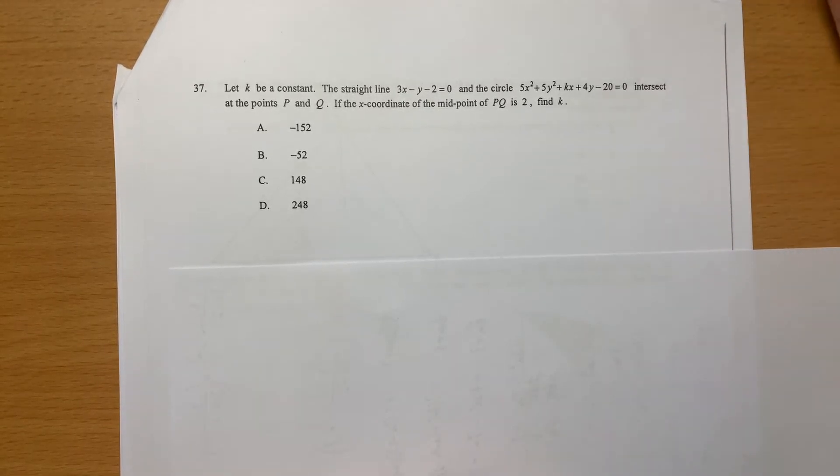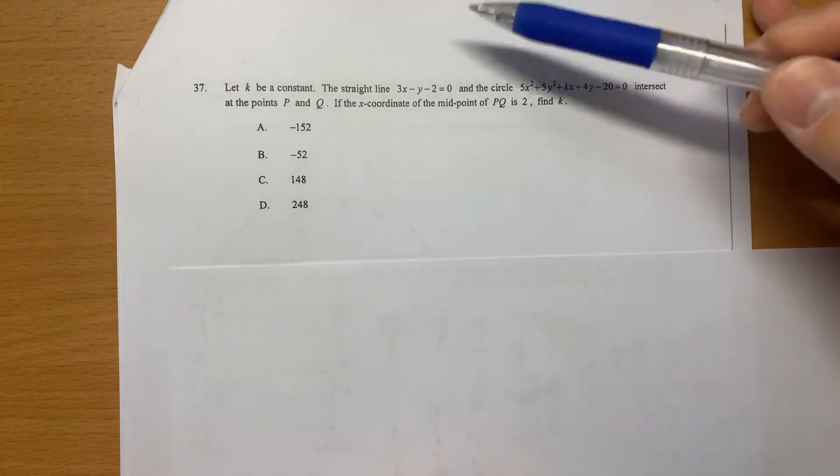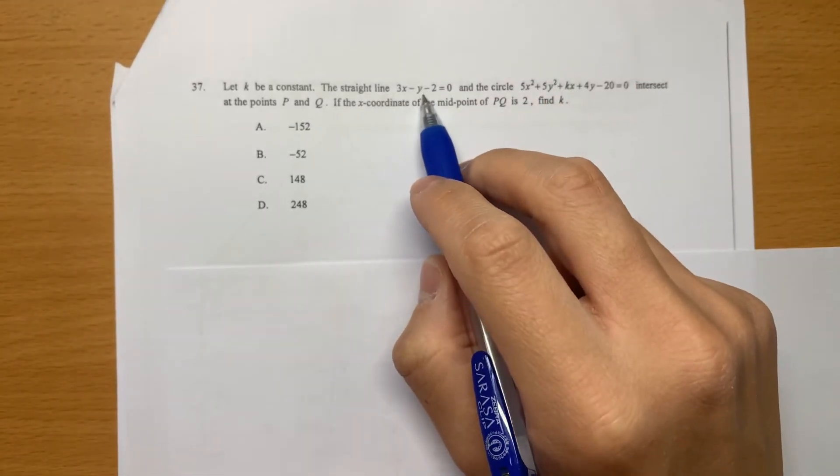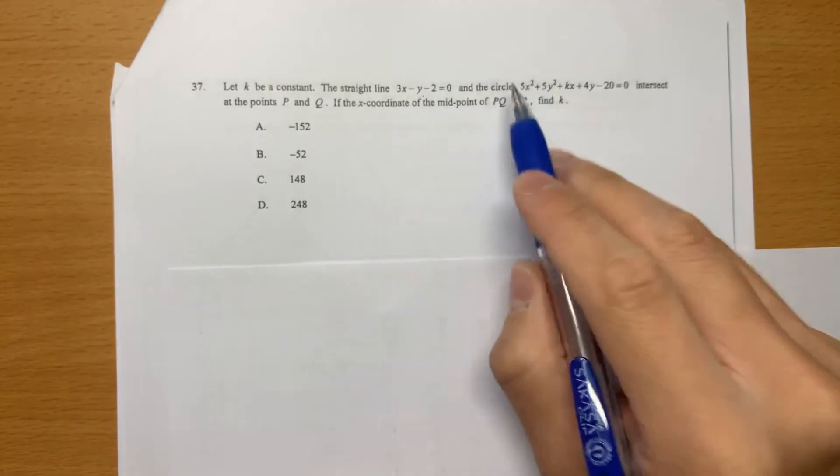Question 37 is about locus related to straight line and circle. So let's have a look. There is a straight line. The equation is like this.